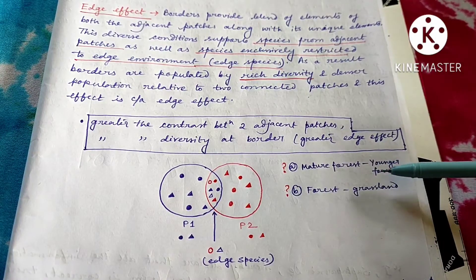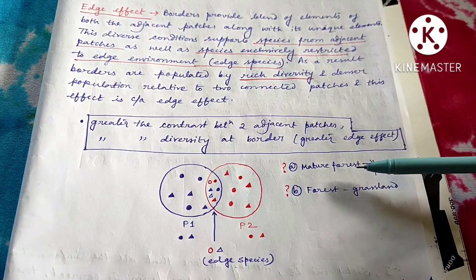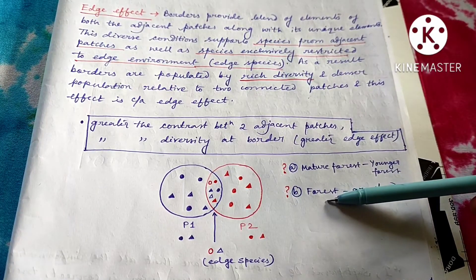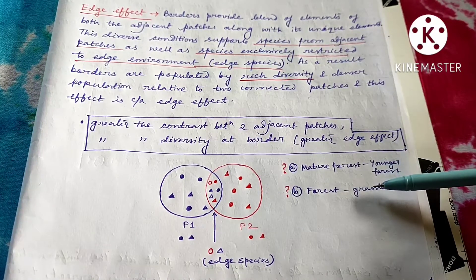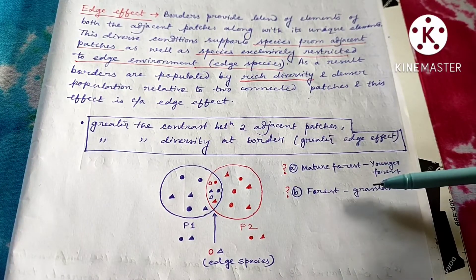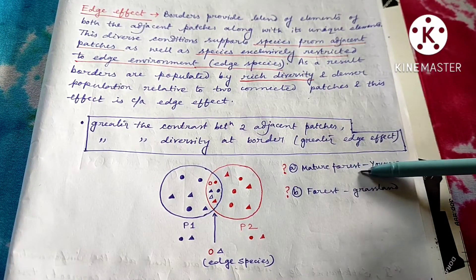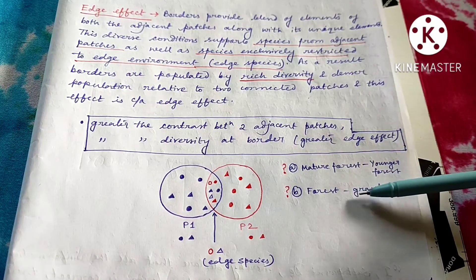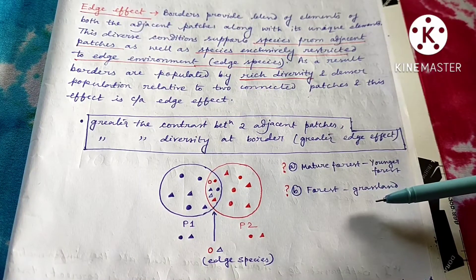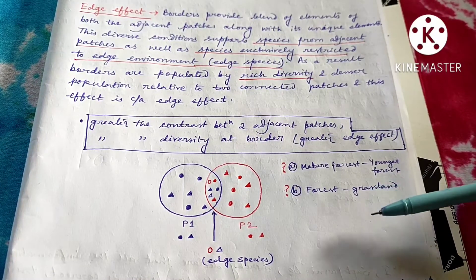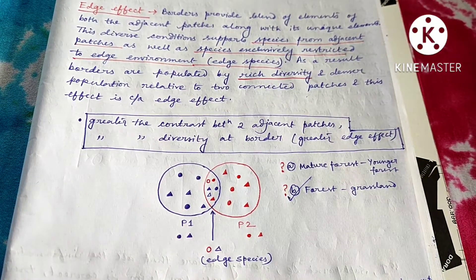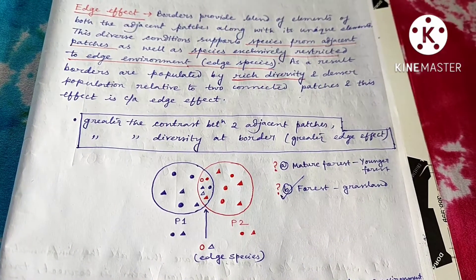Here is a question: if one pair of adjacent patches is mature forest and younger forest, and another pair is forest and grassland — in which border will you find greater edge effect and biodiversity? The first pair has less contrast and the second pair has more contrast, so the forest-grassland border will show more edge effect and more diversity than the mature-forest and younger-forest border.